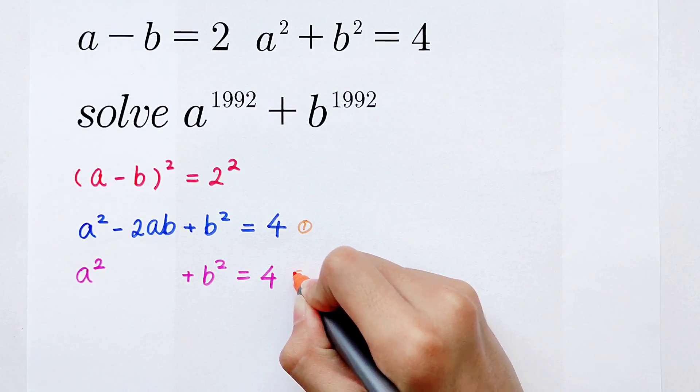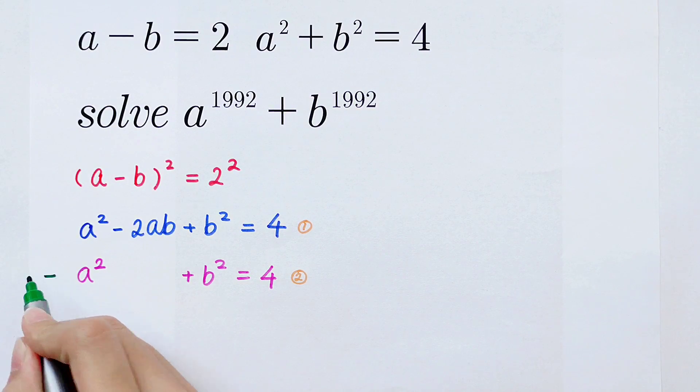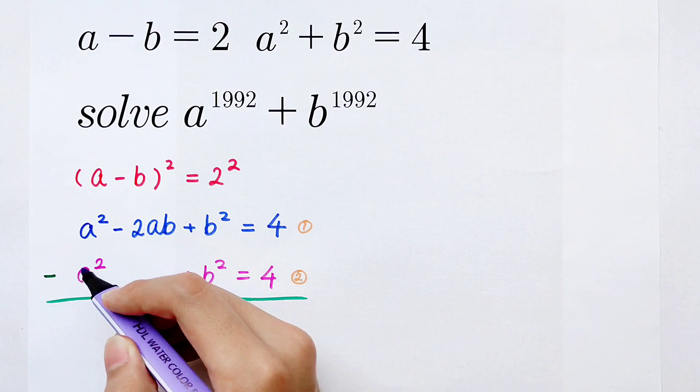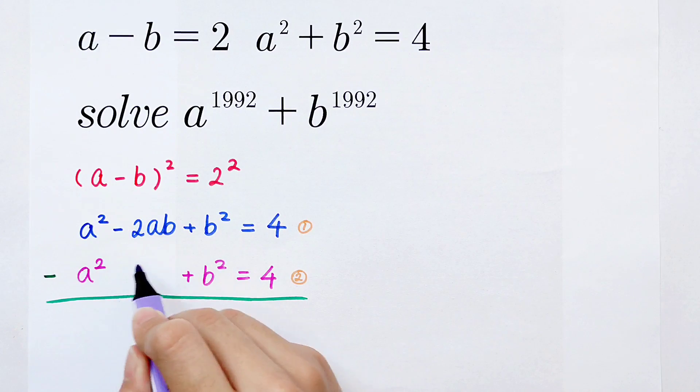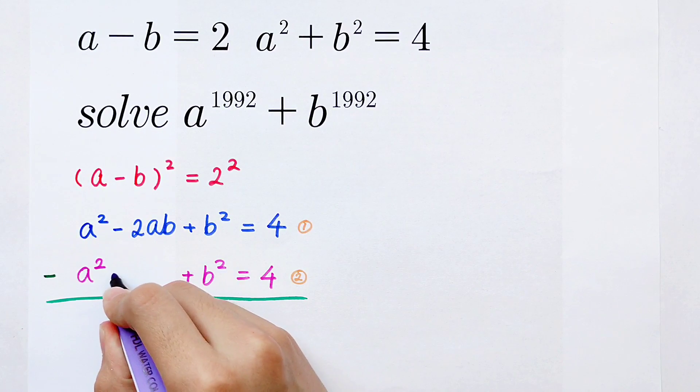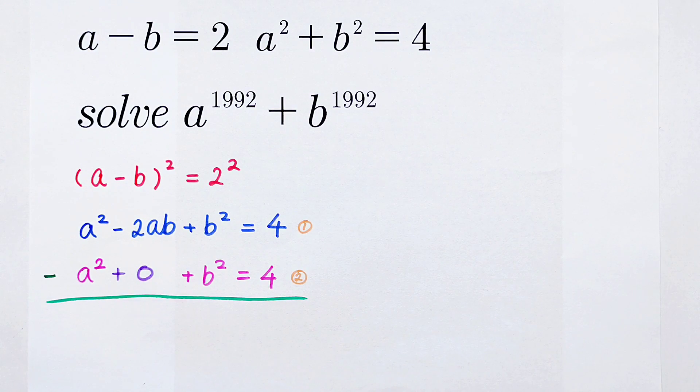The first equation, the second equation. Now we minus them. Here a² minus a² is 0, and -2ab minus 0ab, or 0ab, whatever.